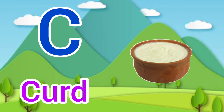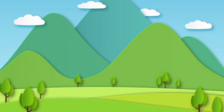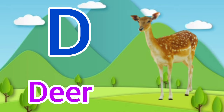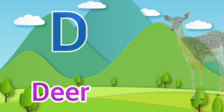C for curd, curd means dahi. D for deer, deer means hiran.